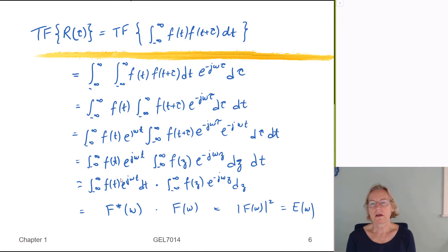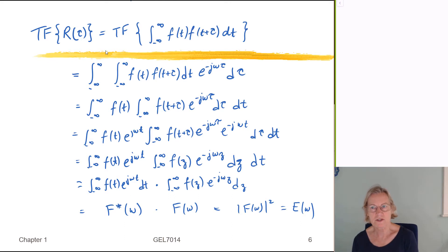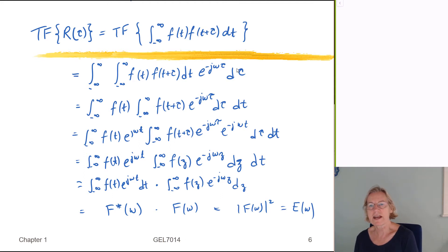Here is a mathematical demonstration of the fact that starting from the autocorrelation function, the Fourier transform gives us the energy spectral density. We're looking for the Fourier transform of the integral of the signal correlated with itself at a lag of tau — integrating over t from minus infinity to infinity, remaining a function of the lag tau. When we take the Fourier transform, we multiply by e^{-jωτ} and integrate over tau, which is the definition of the Fourier transform. The next step is simply to change the order of integration.